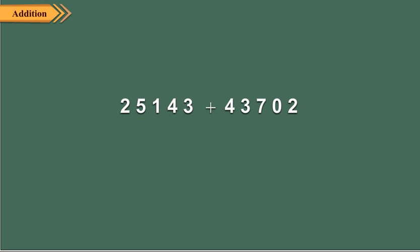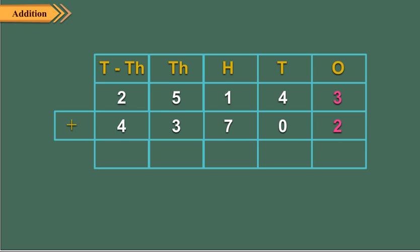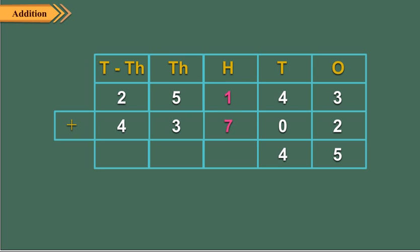We first arrange the numbers in columns. Add ones: 3 ones plus 2 ones is equal to 5 ones. Write 5 in the ones place. Now add the tens: 4 tens plus 0 tens is equal to 4 tens. Write 4 in the tens place. Add the hundreds: 1 hundred plus 7 hundreds is equal to 8 hundreds. Write 8 in the hundreds place.